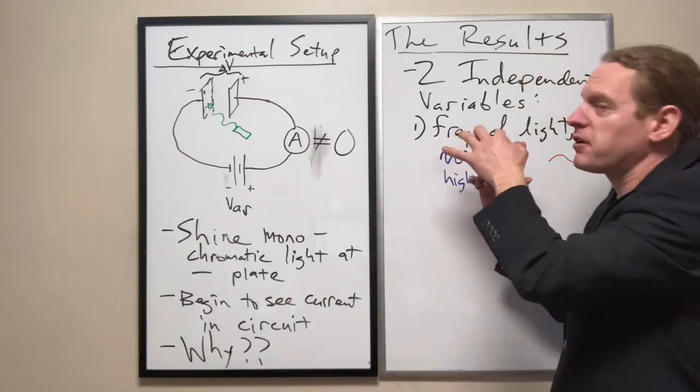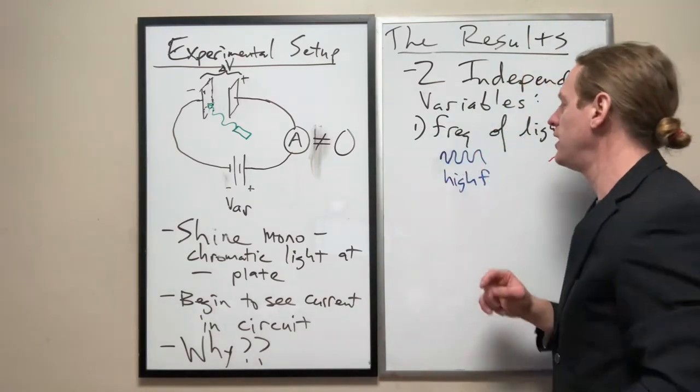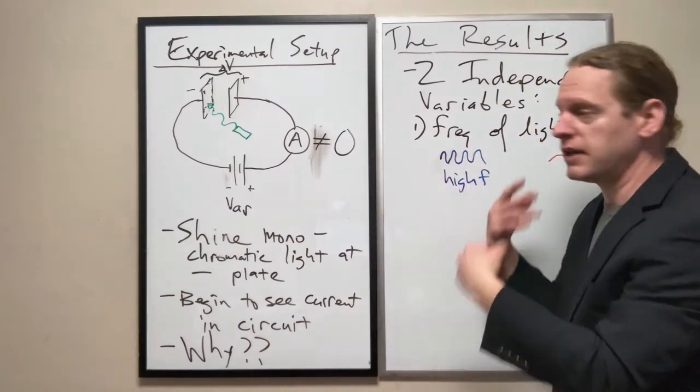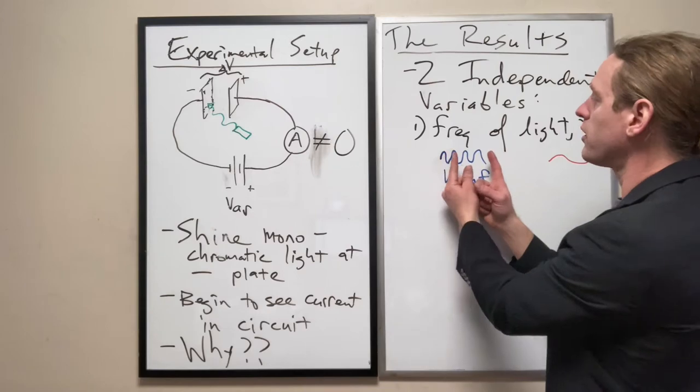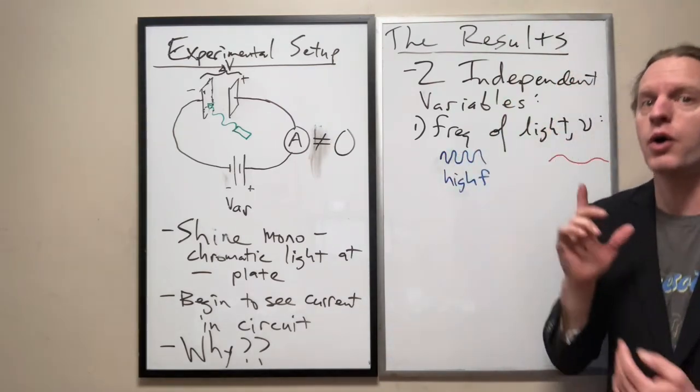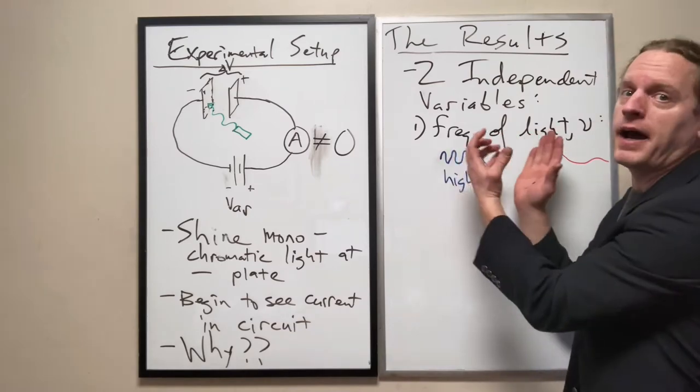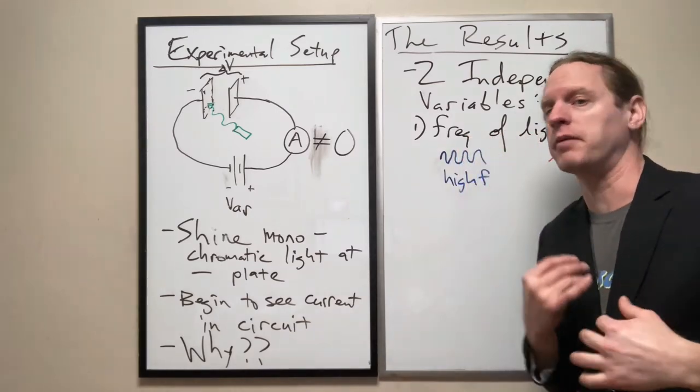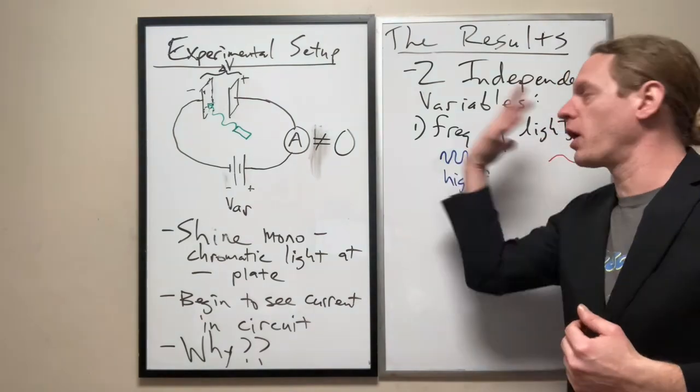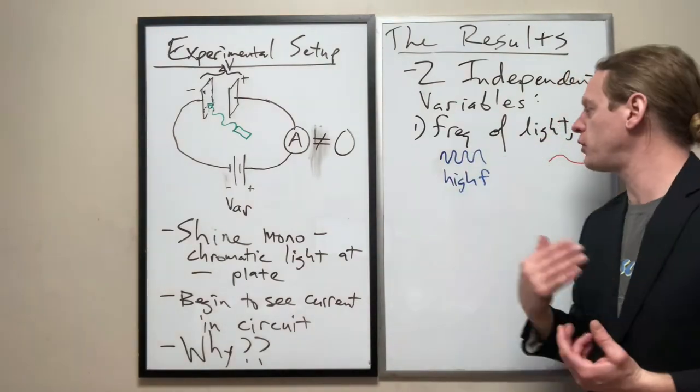So if 90 wave crests pass us per second, that's what we're talking about as far as a wave number. And the shorter the wavelength of light, the higher the frequency. Therefore you have a higher frequency.